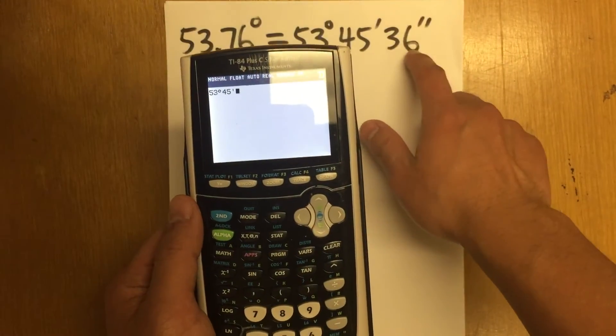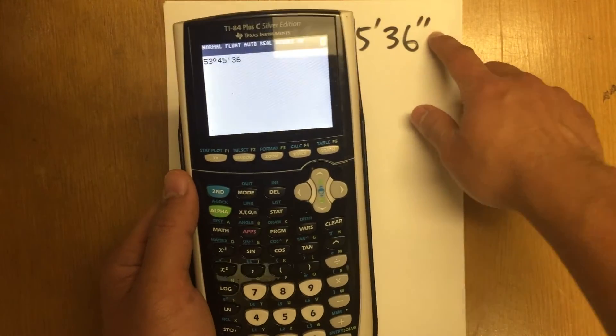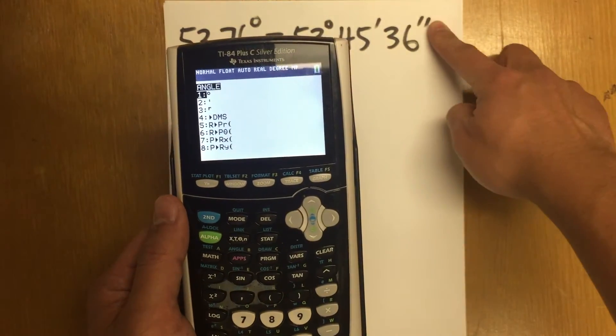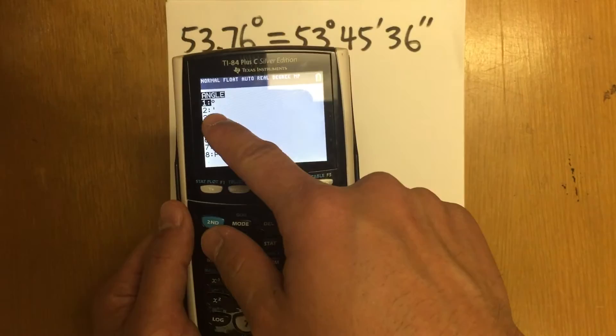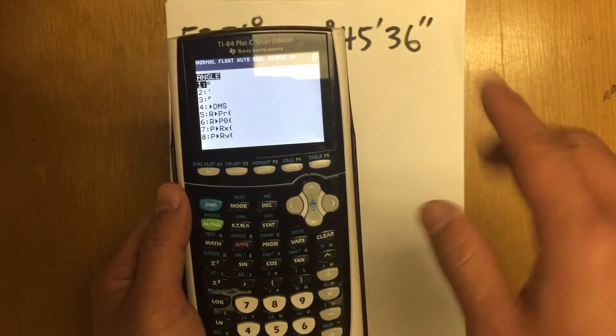I also have to put down 36 seconds. But in this case, if you go back to second angle, in fact, we don't have the symbol for the seconds. And can we use this twice? No, we cannot. That's just how the calculator was programmed. We cannot use option two twice. It doesn't work like that.